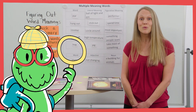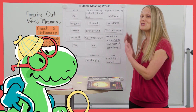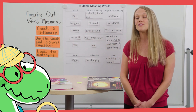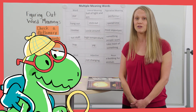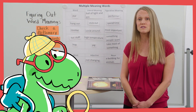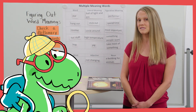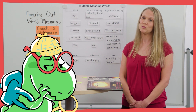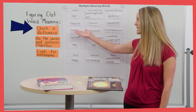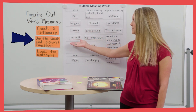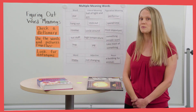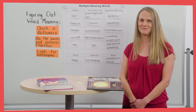We did it, word detectives. We found multiple meaning words in the book, placed them on our chart, and used strategies to figure out what they mean. Remember that some words and phrases can have both literal and figurative meanings, and some words can be different parts of speech, which changes what they mean. When you're reading, writing, and listening to words, see how many multiple meaning words and phrases you can find. Remember to use strategies like checking a dictionary, using the words and pictures together, and looking for antonyms to figure out what words mean. You can use these strategies with any book, not just this one. See you again soon!